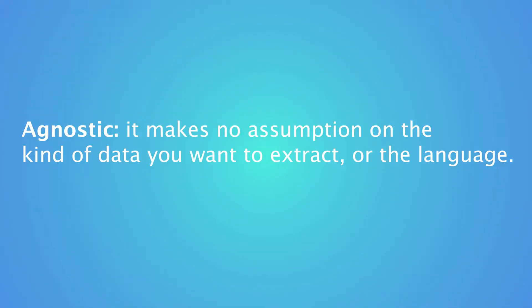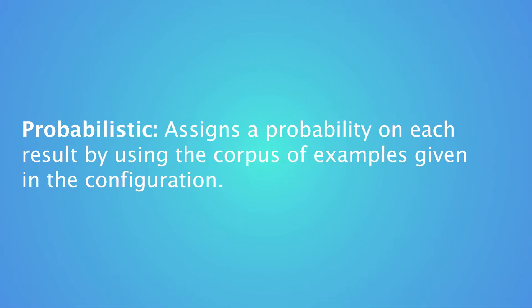Duckling is agnostic, never assuming the kind of data you want to extract or the language, meaning it can be trained on any combination of examples and rules for any tasks. It also is probabilistic, assigning a probability on each result and deciding which results are most likely by using all of the examples given.